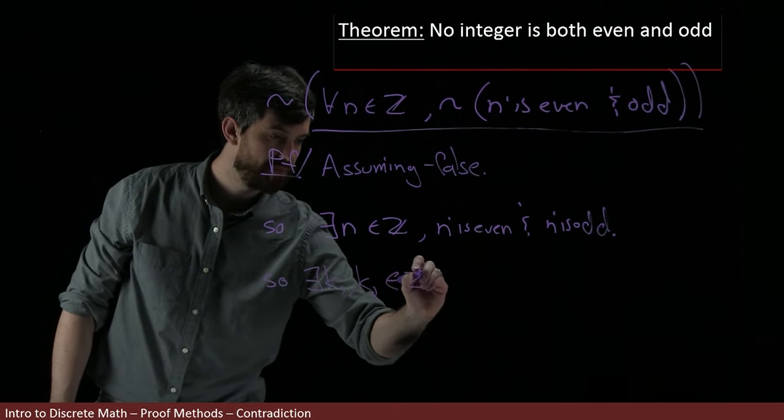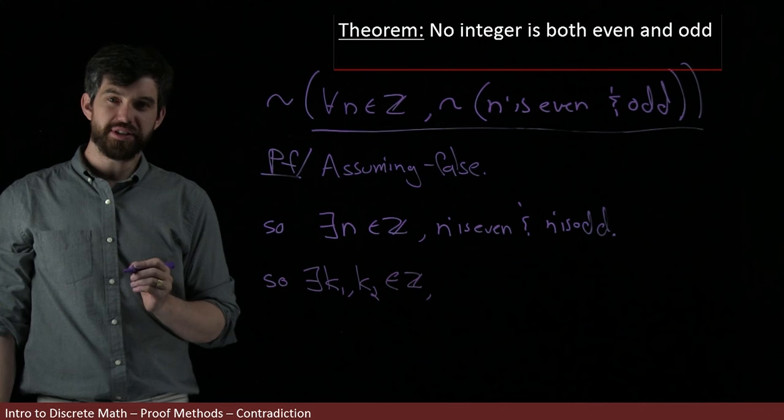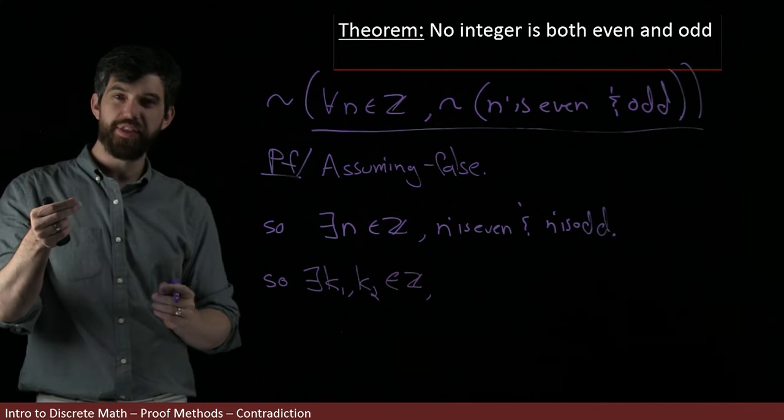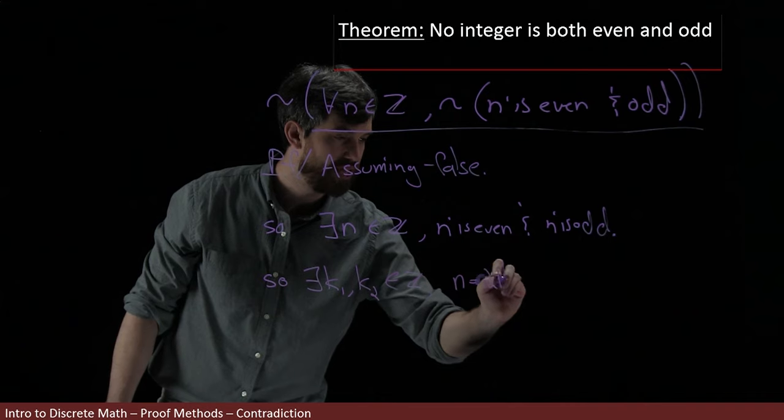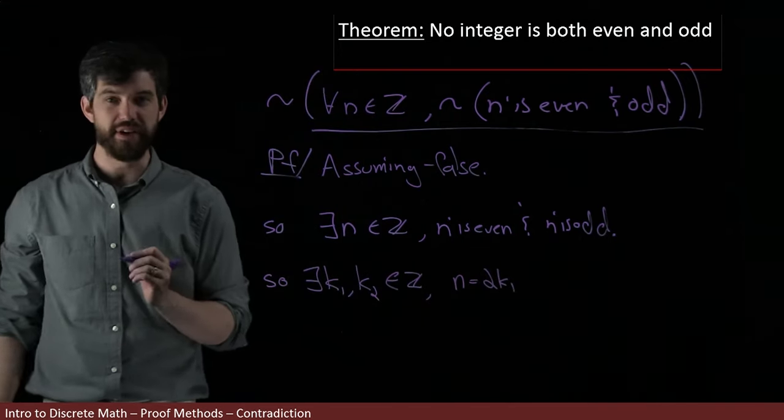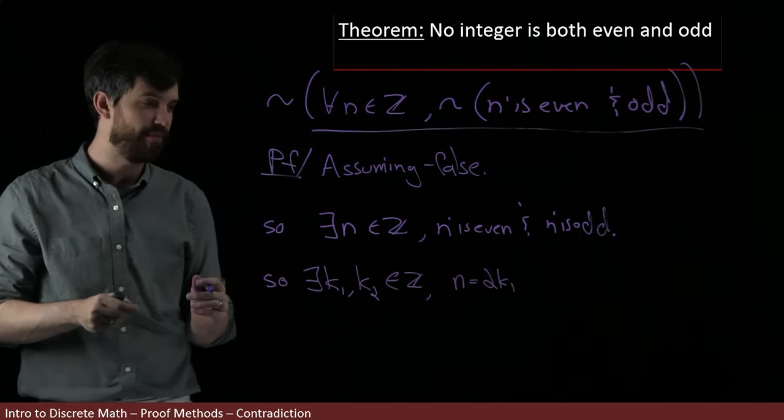And they have the property that I can rewrite the n and the m. I can say that my n is going to be twice the k1 because it's even. That's what it meant to be even, that you can write it as twice something.